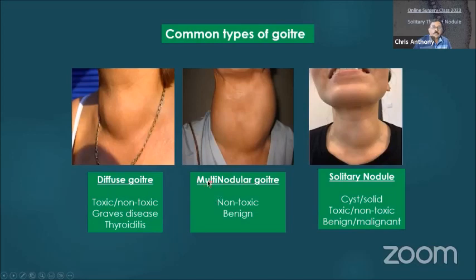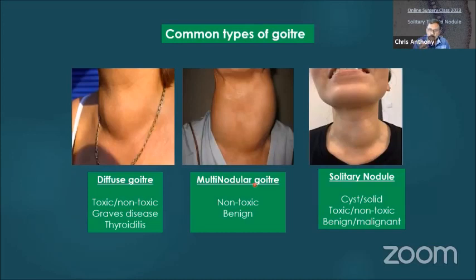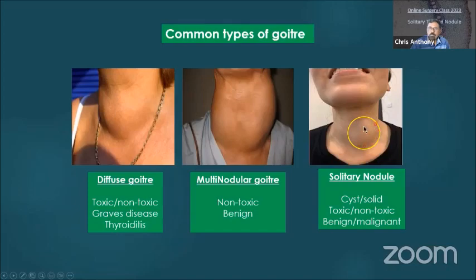The other one is your multinodular goiter — you can see right side and left side, with two large nodules visible; there may also be other small nodules. Multinodular goiter is a very common condition and is a very important case, especially for year five long cases. It can be either toxic and is usually benign. This is what we are interested in today — this is a solitary nodule, which can be a cyst, can be solid, toxic, non-toxic, or can be benign or malignant.